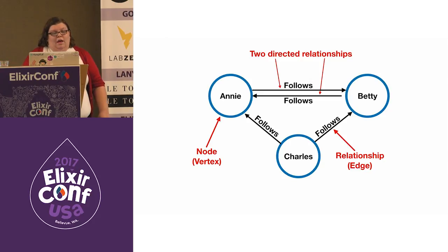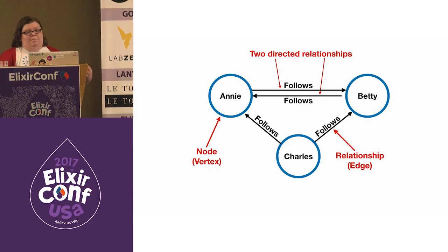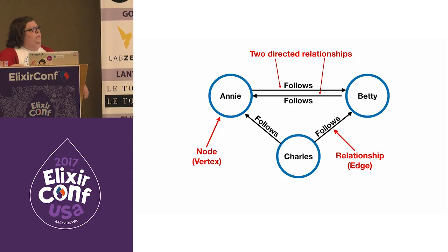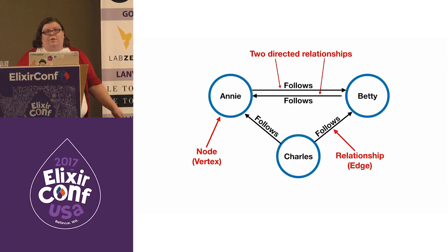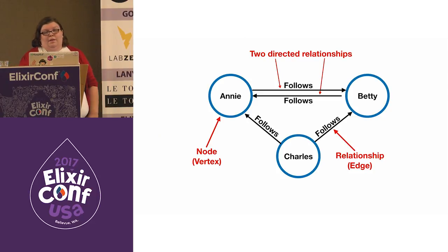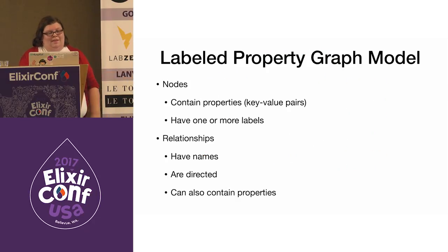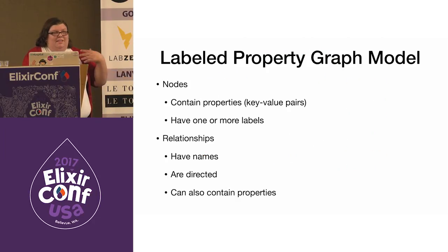At the top we have two relationships between Annie and Betty. There are two relationships because the fact that Annie follows Betty has no impact on whether or not Betty follows Annie. So you just learned all about graph databases — that's the basic structure.